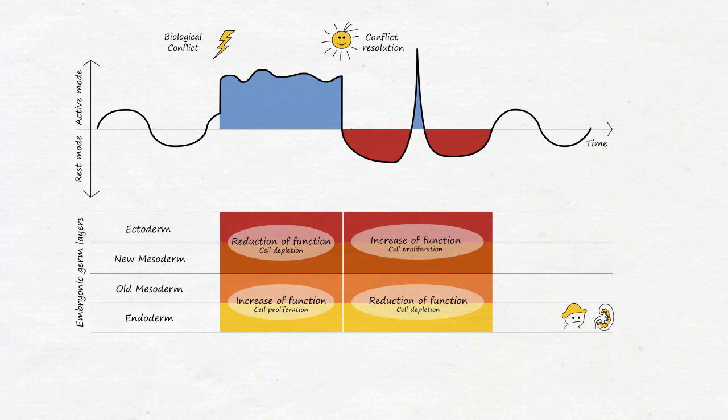Returning to our introductory example. The kidney collection tubules belong to the endoderm, i.e., in the context of an SBS, they react with increased function and cell proliferation, which leads to an increased reabsorption of water. After conflict resolution, there is always a function reduction and cell removal until normalization.